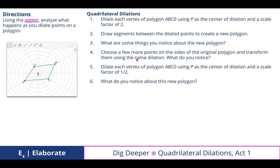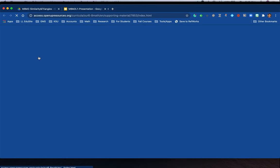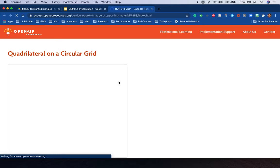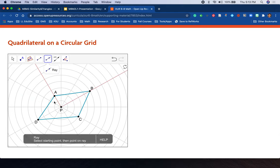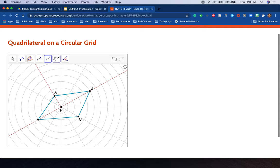Using the applet, analyze what happens as you dilate points on a polygon. This is quadrilateral dilation act one. It gives us several steps here and some things to think about as you go through this. Just because we don't have those rays anymore extending from the center of dilation, I can use the rays to extend them to each of those vertices. By doing that, I can intersect and determine the dilated figure.